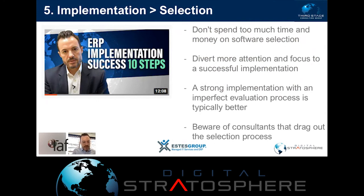We help clients use a database with 30,000 business requirements against close to a thousand different systems in the marketplace, providing objective data that counterbalances the biased data you get from vendors, demos, and the RFP process. It also speeds things up — helping get to a short list and decision faster. Be wary of consulting firms or project teams that drag out the selection process, either because they don't know enough about the systems in the market or because that's how they make their money.